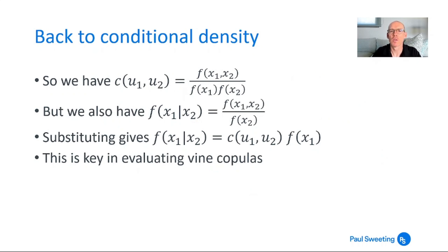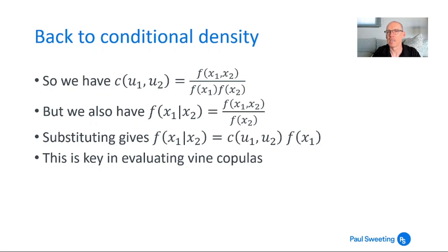So we have c(u1, u2) = f(x1, x2) / (f(x1) · f(x2)) from rearranging. We also have f(x1 | x2) = f(x1, x2) / f(x2). With another bit of substitution, we can show that f(x1 | x2) = c(u1, u2) · f(x1). This is really key when it comes to evaluating vine copulas and evaluating the probability identities and likelihoods of these vine copulas.